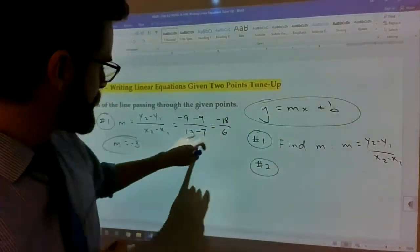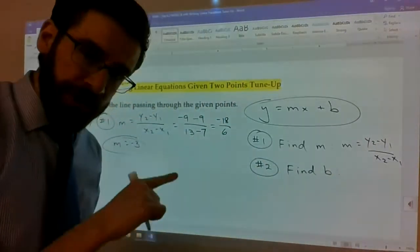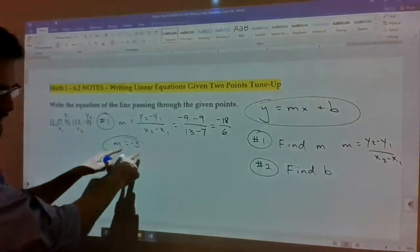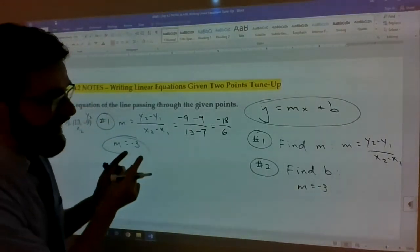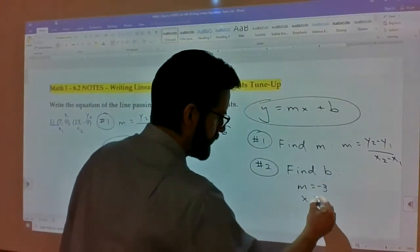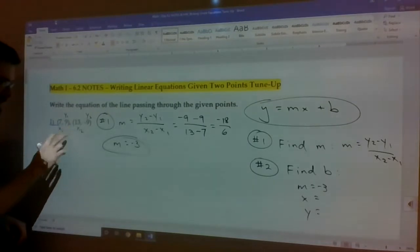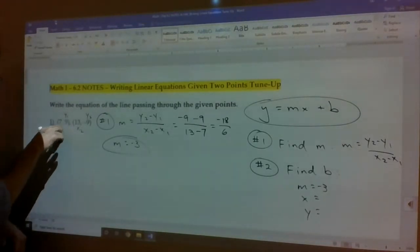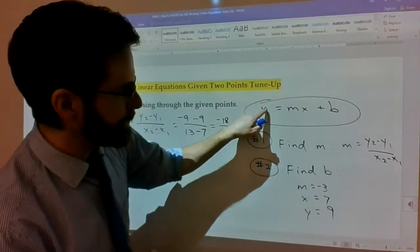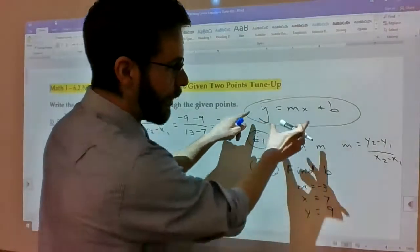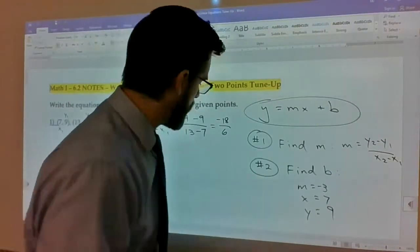So first step, m is equal to y2 minus y1 over x2 minus x1. We just got to plug in and evaluate. The y2 is negative 9, make sure you keep the negative on there. Operation is minus a positive 9, so negative 9 minus 9. x2 is 13, operation always minus, then it's minus a positive 7.